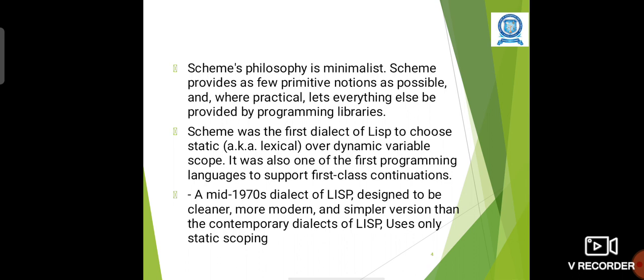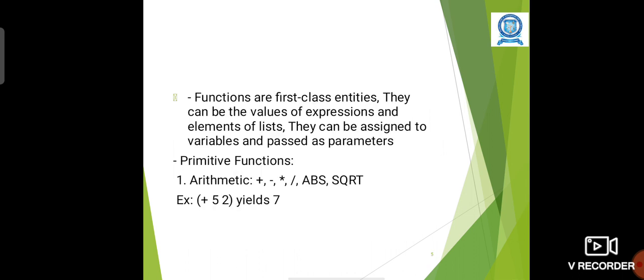Scheme was the first dialect of Lisp to choose static or dynamic variable scope. It was also one of the first programming languages to support first-class continuations. Functions are first-class entities. They can be the value of expressions and elements of lists. They can be assigned to variables and passed as parameters.